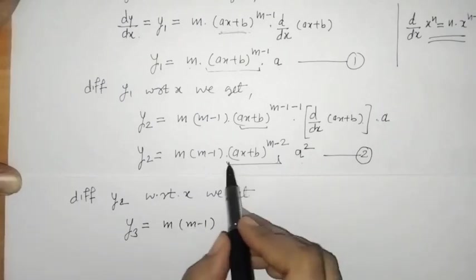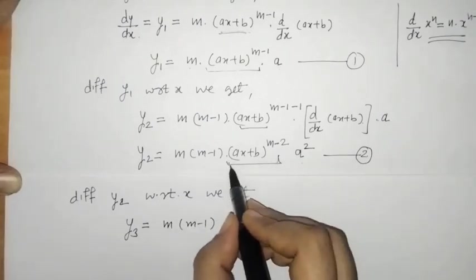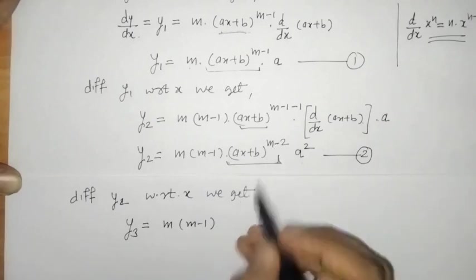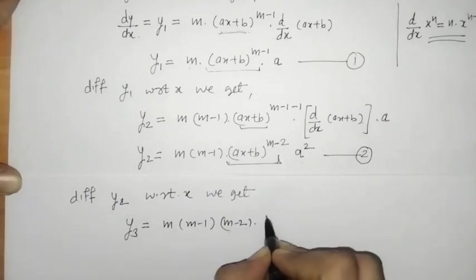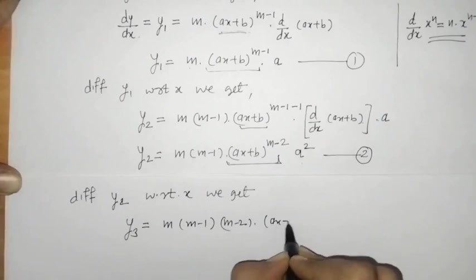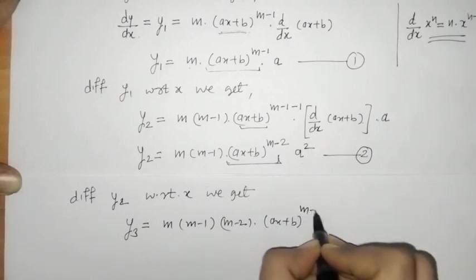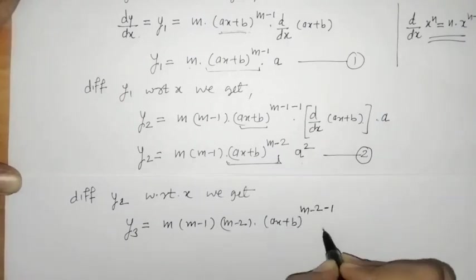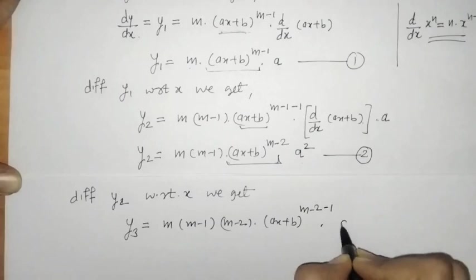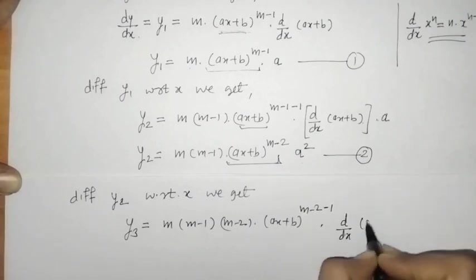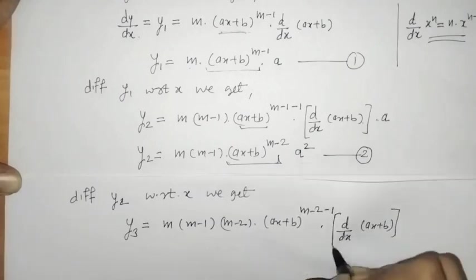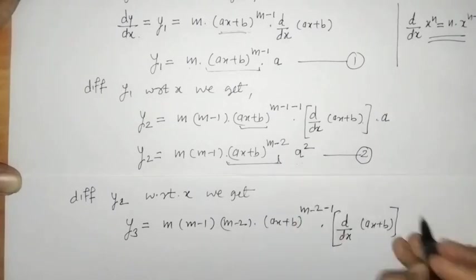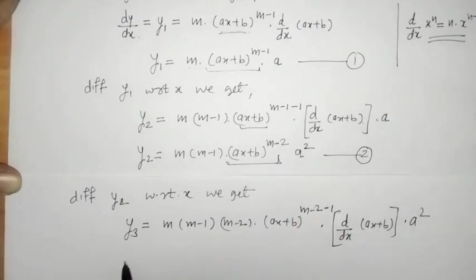Taking the derivative of (ax + b) gives another factor of a, so a squared becomes a cubed. We get y3 = m(m−1)(m−2)·a³·(ax + b)^(m−3). This is the third derivative.